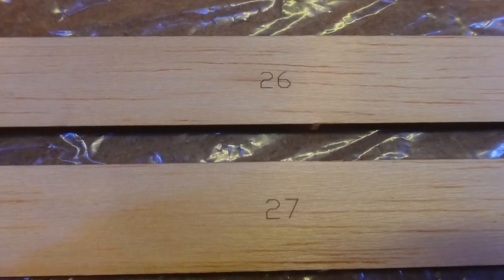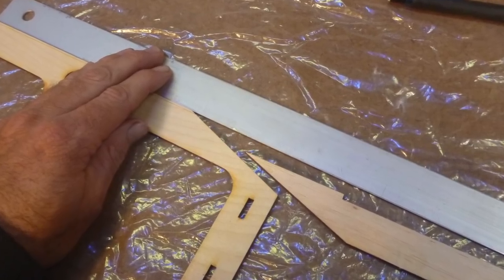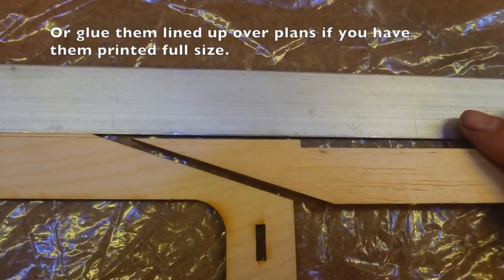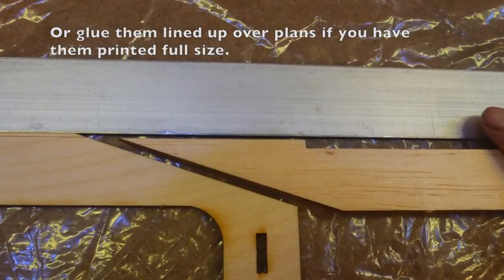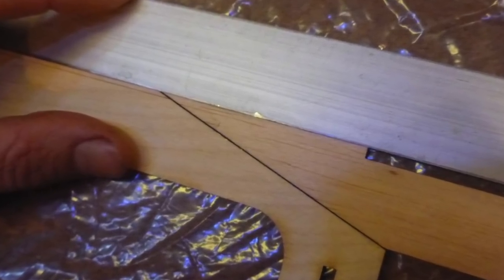Locate parts number 26 and 27. Refer to the fuselage assembly drawing to see their orientation, use a straight edge to line them up with the fuselage side. Glue them into place, making sure that they are straight and flat.